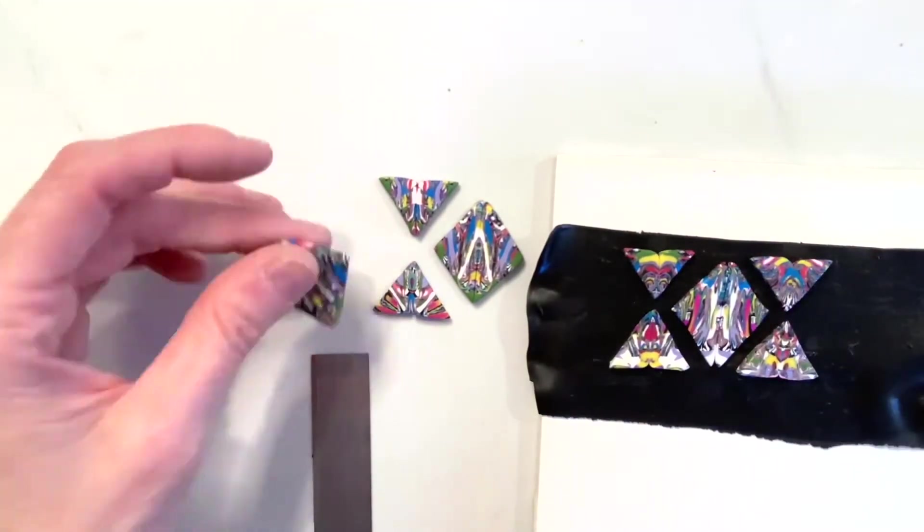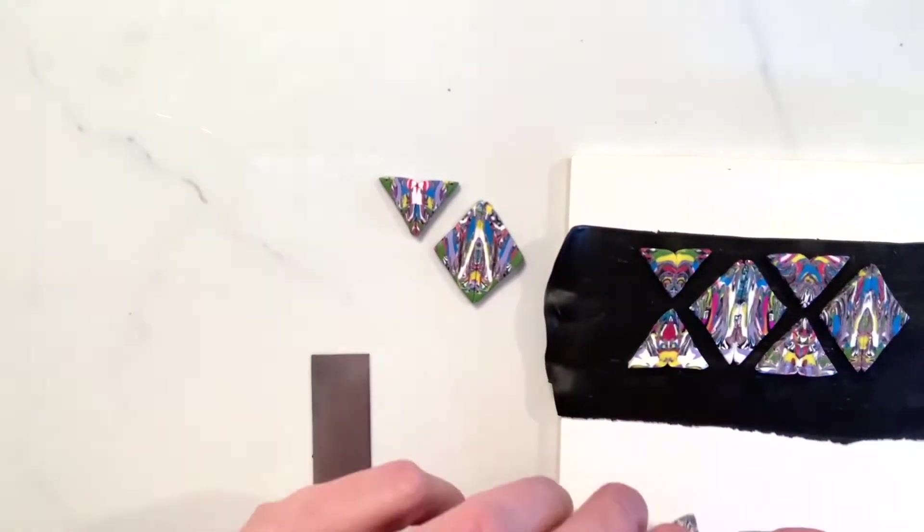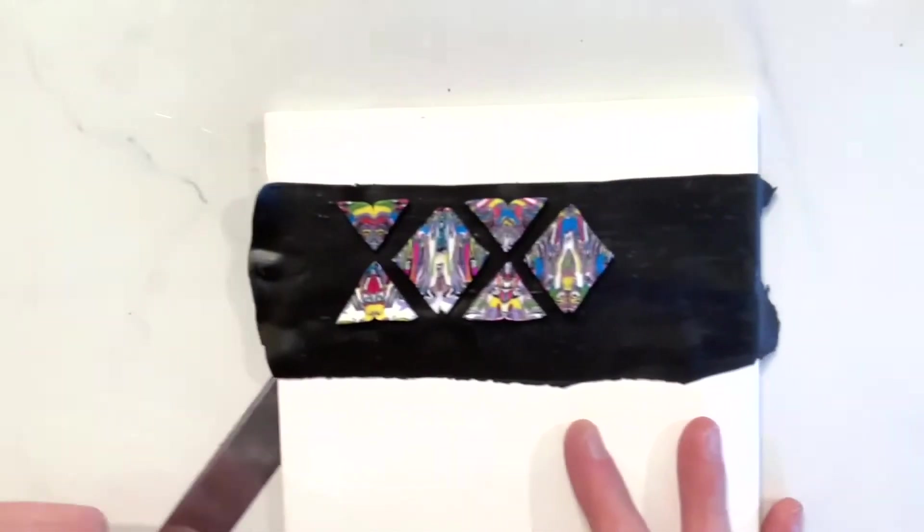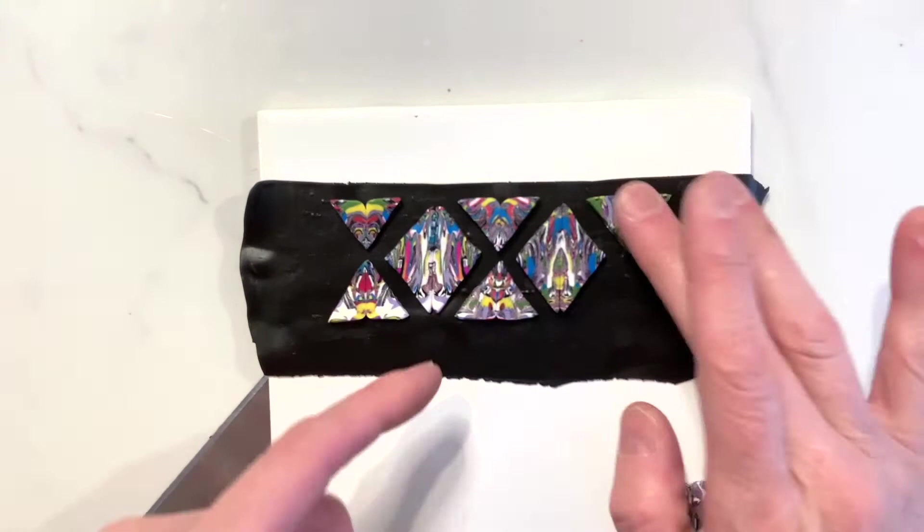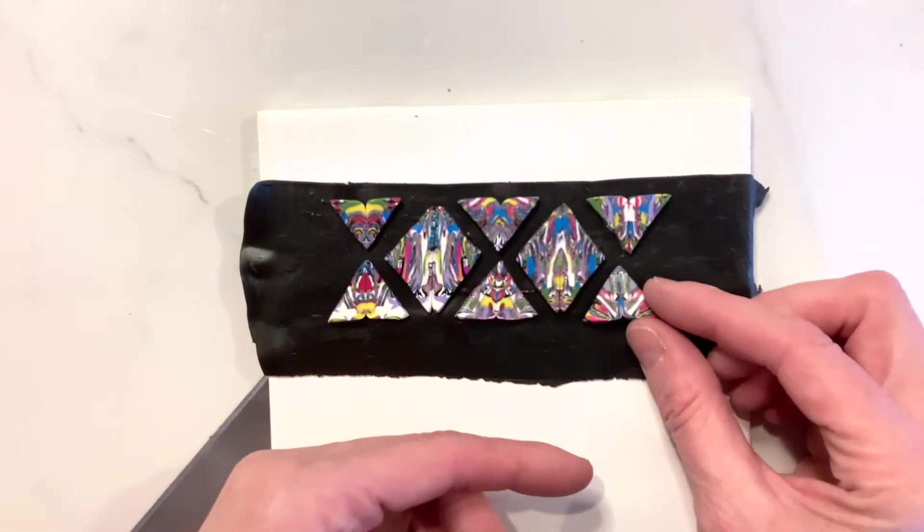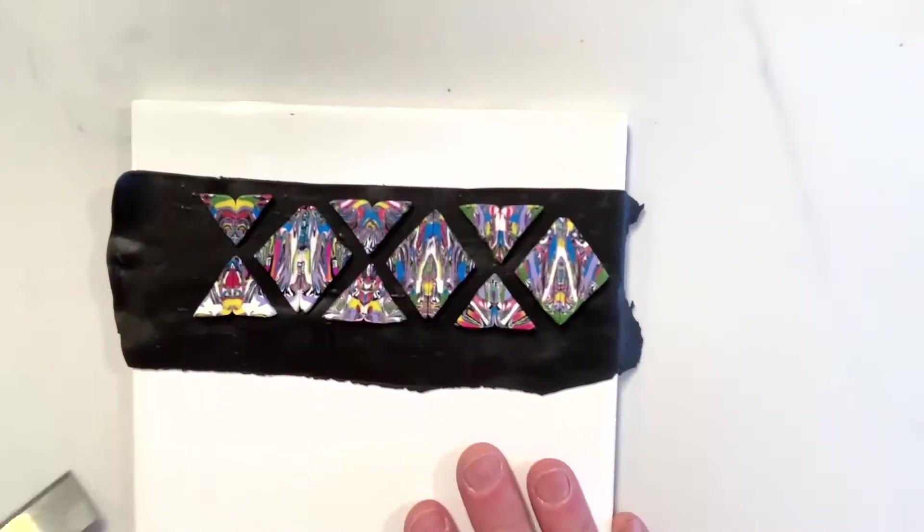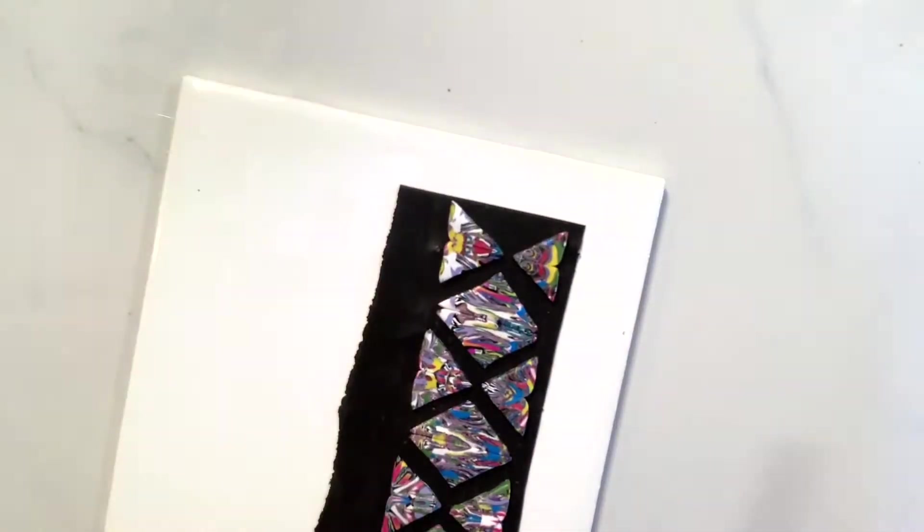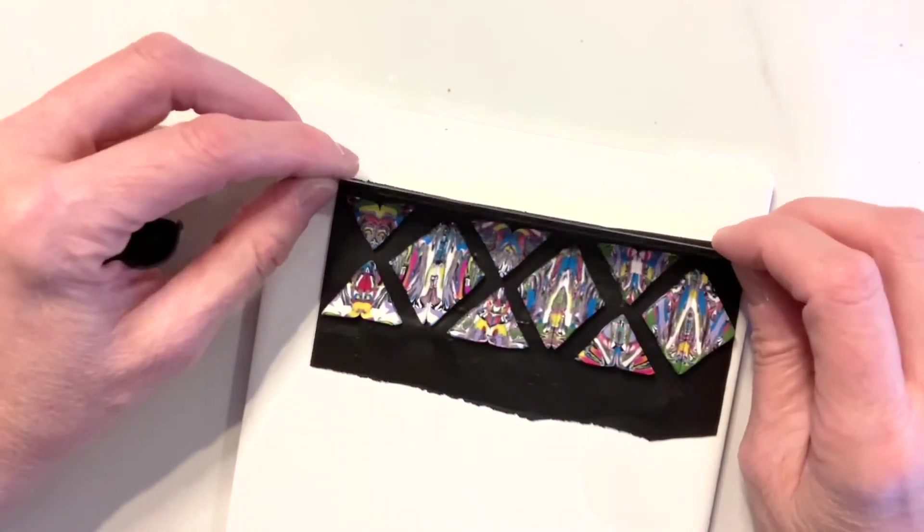Once I have this together, this particular piece, I could keep going and make more sections, cut more diamond and triangular patterns with this, and it could turn into a really nice border for either a votive or some other kind of piece that I'm working on.